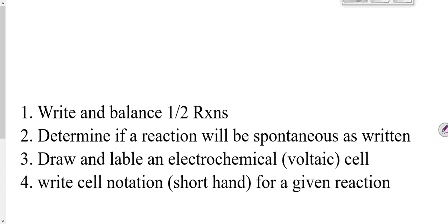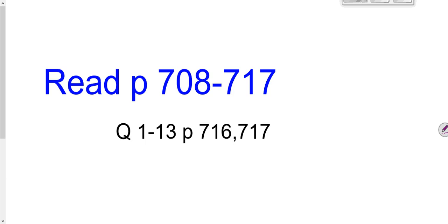What I'm going to get you to do is write and balance the half reactions for a redox reaction I give you, then use the reduction potentials to decide if it's spontaneous — expect the one with the higher value to be reduced. Then I want you to draw and label the voltaic cell for that reaction and give me the shorthand cell notation. In your textbook on pages 708 to 717 they'll review this with you, and practice questions 1 through 13 are on pages 716 and 717.